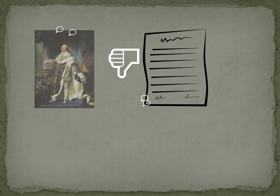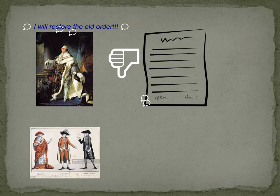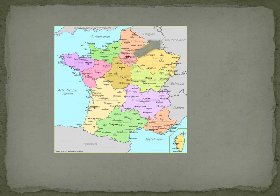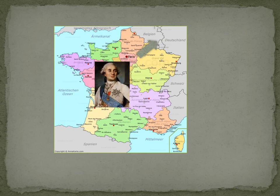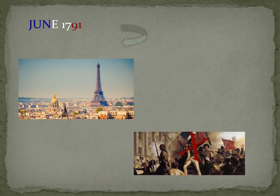Louis XVI rejected the new constitutional monarchy, so he planned to restore the old order in France. In June 1791, he tried to escape. Although he was disguised, he was recognized in Varennes and brought back to Paris, where he was officially proven as an enemy of the revolution.